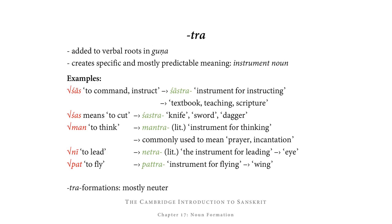Man, to think, gives us mantra, literally an instrument for thinking, but commonly used to mean a prayer or incantation. Nī, to lead, gives us netra, literally an instrument for leading, which is used to mean the eye. Pat, to fly, gives us pattra, literally an instrument for flying, used to refer to a wing. Tra-nouns are almost always neuter.